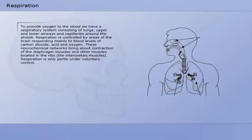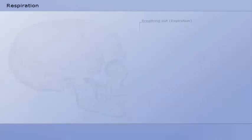To provide oxygen to the blood, we have a respiratory system consisting of lungs, upper and lower airways, and capillaries around the alveoli. Respiration is controlled by areas of the brain responding mainly to blood levels of carbon dioxide, acid, and oxygen. These neurochemical networks bring about contraction of the diaphragm muscles and other muscles located in the ribs. Respiration is only partly under voluntary control.